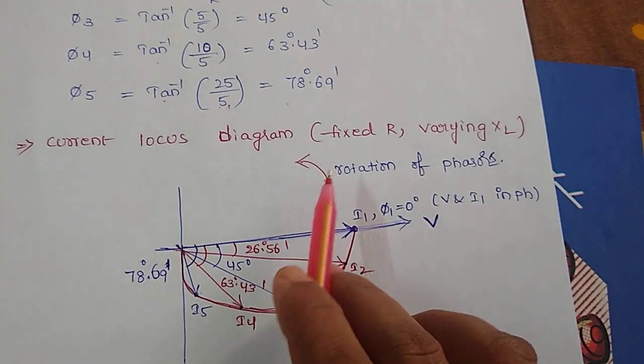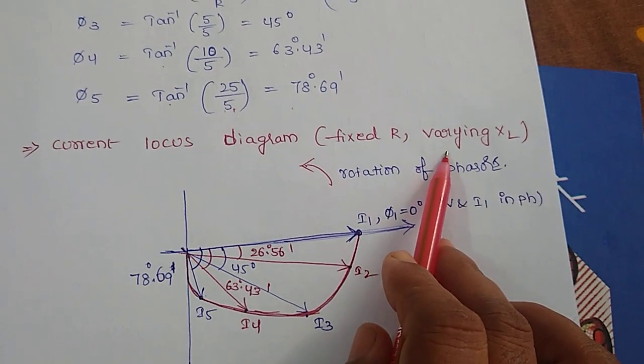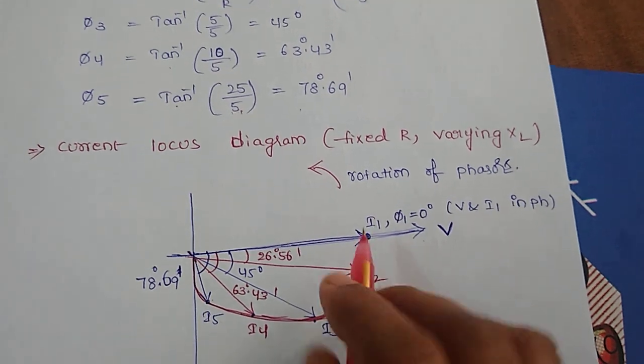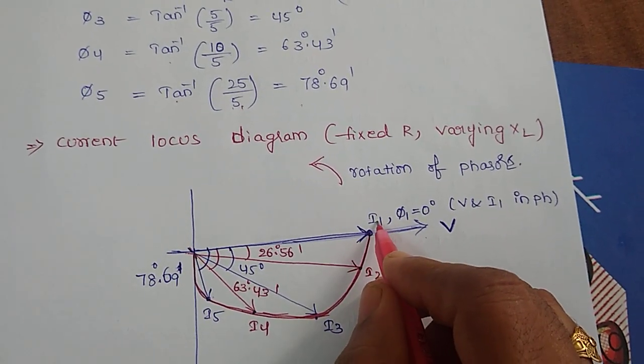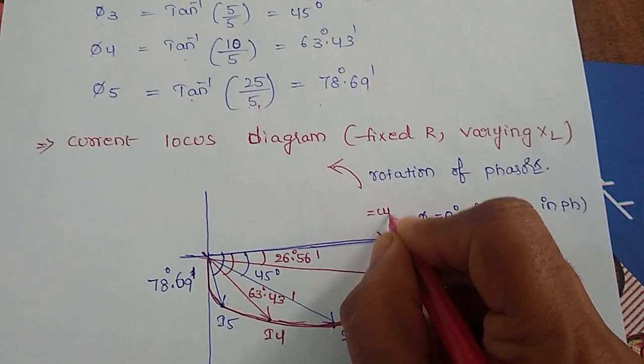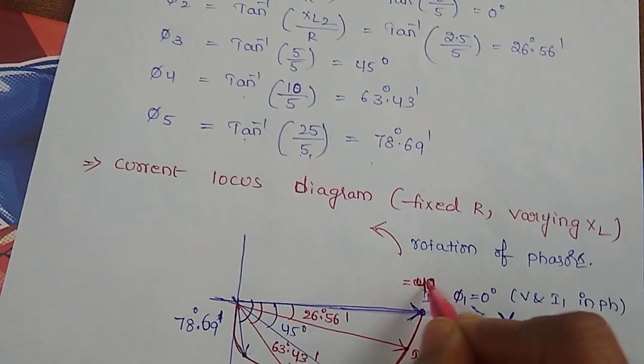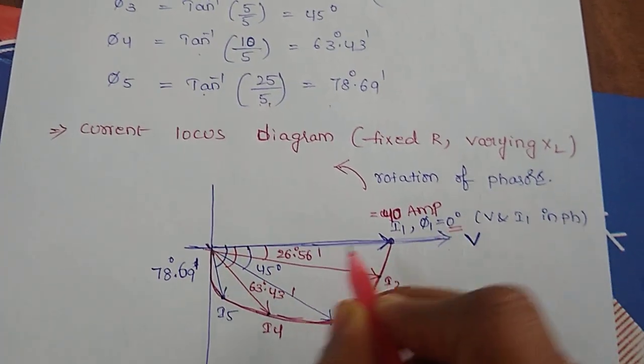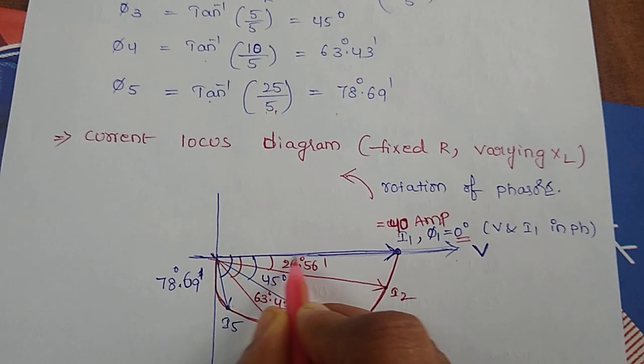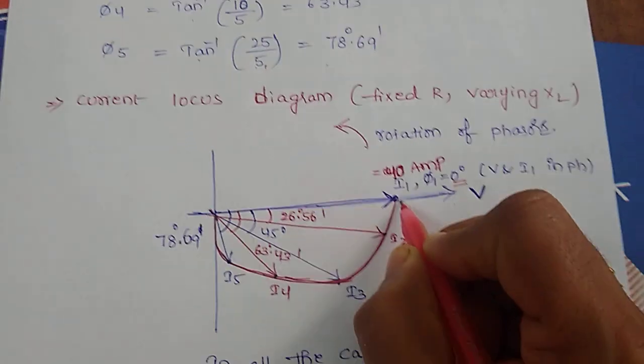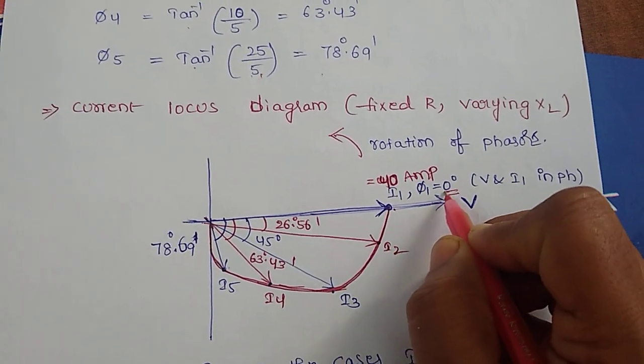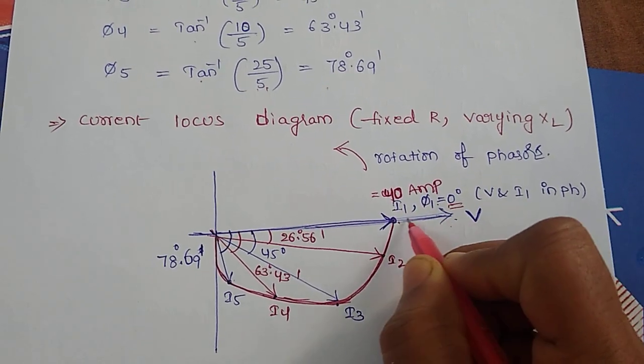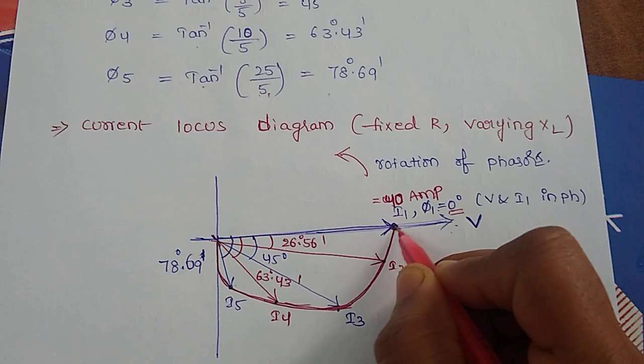Now current locus diagram is the locus of joining all the magnitude and phase angle of current phasors. Here the given case is fixed R value and varying XL value. I have taken V on X axis. For the first point I got I1 value as 40 amperes with phase angle of 0 degrees. So 0 degrees phase angle means current and voltage are in same phase. That's why I have represented I1 phasor here.